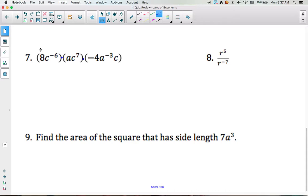So we're going to take all the numbers and multiply those together. We have an 8 and a negative 4 gives us negative 32. We have a c to the negative 6. We'll multiply that times c to the seventh and then times c to the first power. So we keep the base c. Negative 6 plus 7 is 1 and 1 plus 1 would be 2.